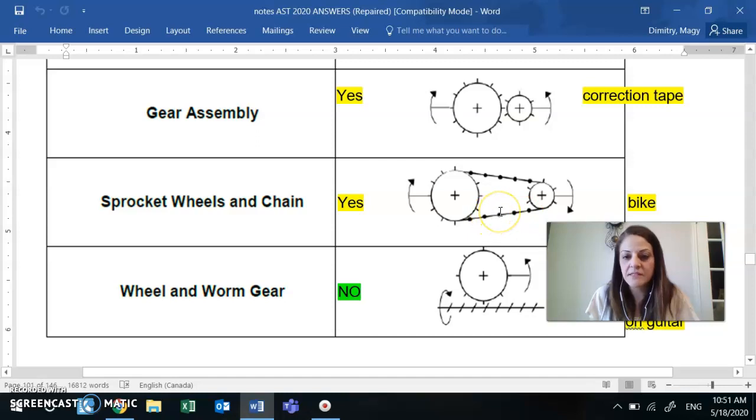But in these ones here for a bicycle, that's the example, you'd have the chain, that would be the difference. It's made of metal in here and then you have the gears attaching and they fit into the chains.